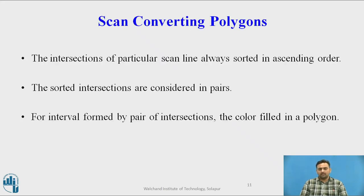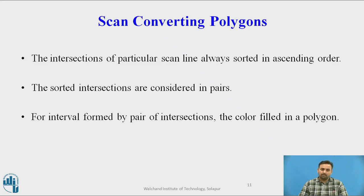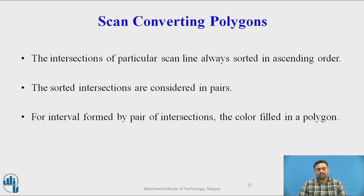Scan converting polygons has certain rules. Whatever intersections we get on the scanline, we must always sort them in ascending order. For example, if intersections are at positions 2, 6, 4, and 9, they should be sorted to 2, 4, 6, and 9. After sorting, they are made into pairs — first and second, third and fourth, and so on. The interval between the endpoints of each pair belongs to the inside of the polygon, while values beyond those pairs are background pixels.